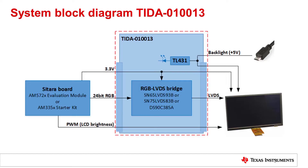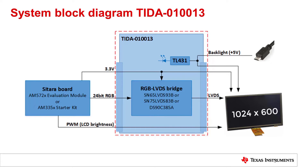Here you see the system block diagram of the TIDA-100-13. On the left side you see the Sitara board which acts as a video source supplying a 24-bit RGB signal to the reference design. This video signal is then converted to LVDS and supplied to the LCD, which displays it at 1024 by 600 pixels.